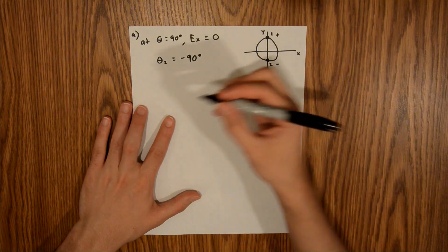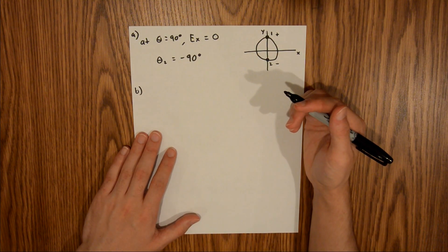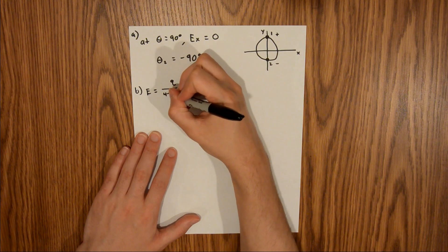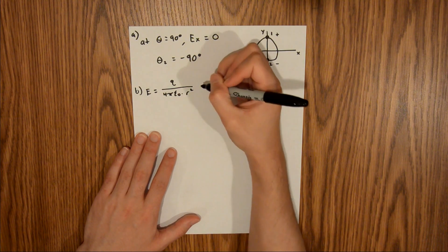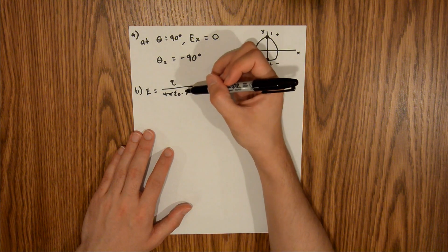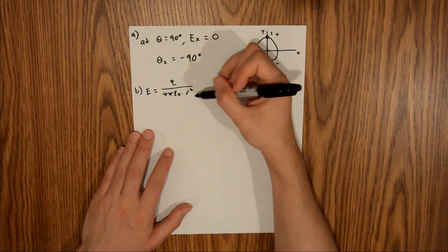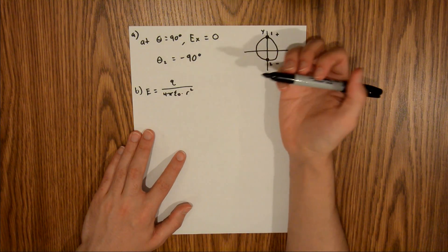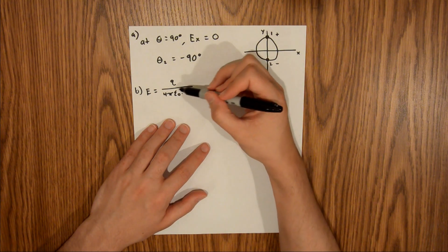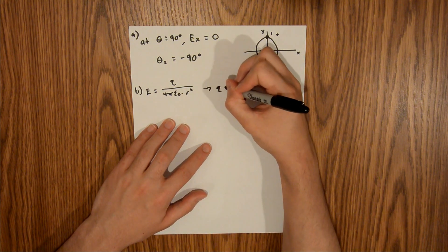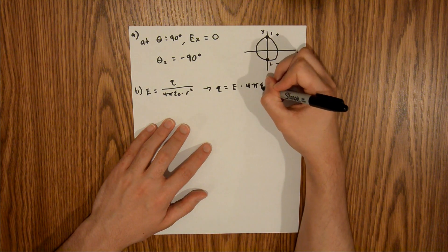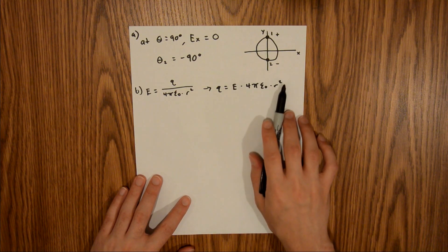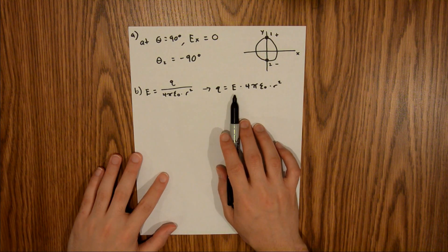Now I'm going to move on to Part B, which asks us to find the charge on bead one. We know that the electric field is equal to charge divided by four pi epsilon naught times r squared, where E is the electric field, q is the charge, epsilon naught is the vacuum permittivity constant, and r is the distance between the origin and our bead — which, since our beads are on a circle, is the radius of the circle. Solving for charge, we multiply both sides by the denominator, giving us charge equals electric field times four pi epsilon naught r squared. We have everything except the electric field.